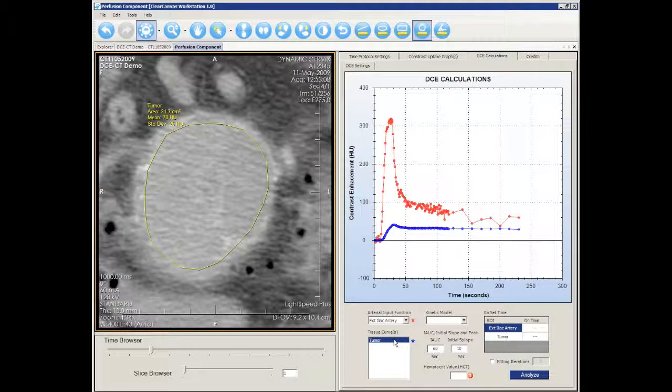There are two published kinetic models that you can use, and the DCE tool will automatically generate a semi-quantitative analysis of your study regardless of which kinetic model you select. We will select the modified TOFTs model.